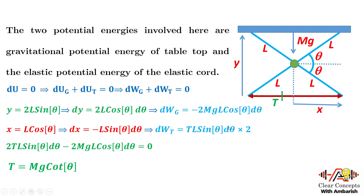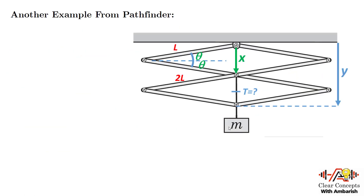Now I'll take one more problem from Pathfinder on the principle of virtual work. This popular problem can be done using torque or force methods, but that turns out to be very cumbersome. With the method of virtual work it's just a breeze. The problem has a frame with four rods: the short rods are length L and the long rods are length 2L. There are frictionless pivots, and the middle pivot and bottom pivot are connected using a string. We need to find the tension in the connecting string, with a mass m hanging due to gravity.